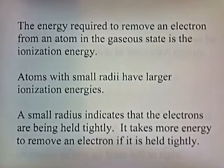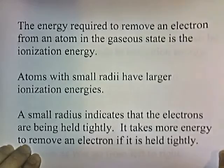The energy required to remove an electron from an atom in the gaseous state is the ionization energy. Atoms with small radii have larger ionization energies. A small radius indicates that the electrons are being held tightly, and it takes more energy to remove an electron if it's held tightly.